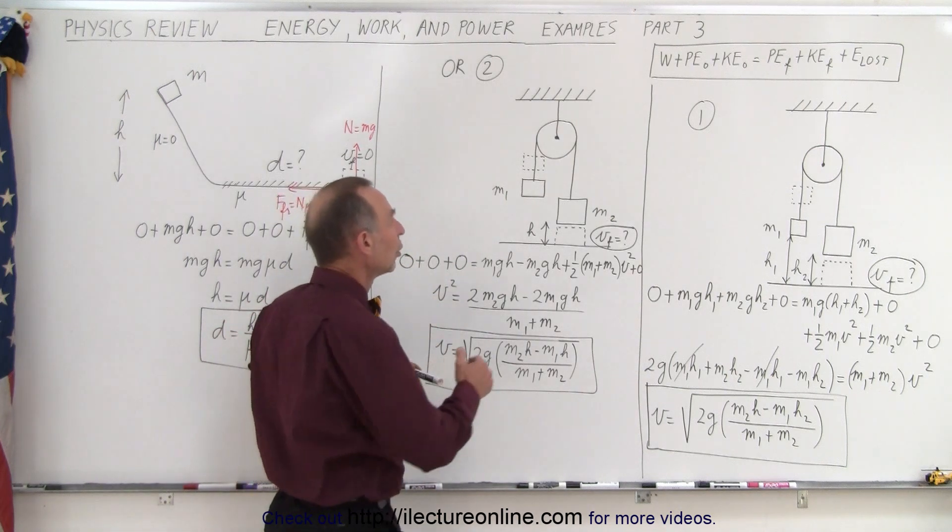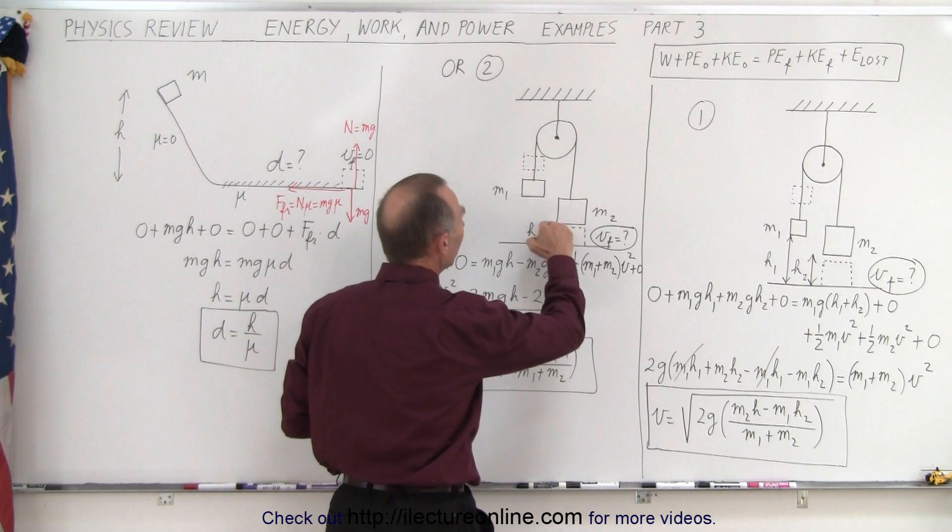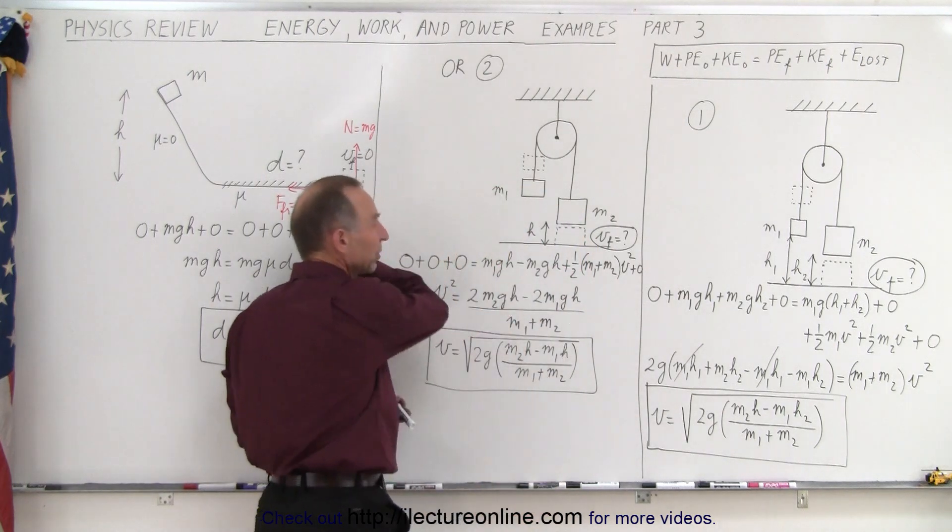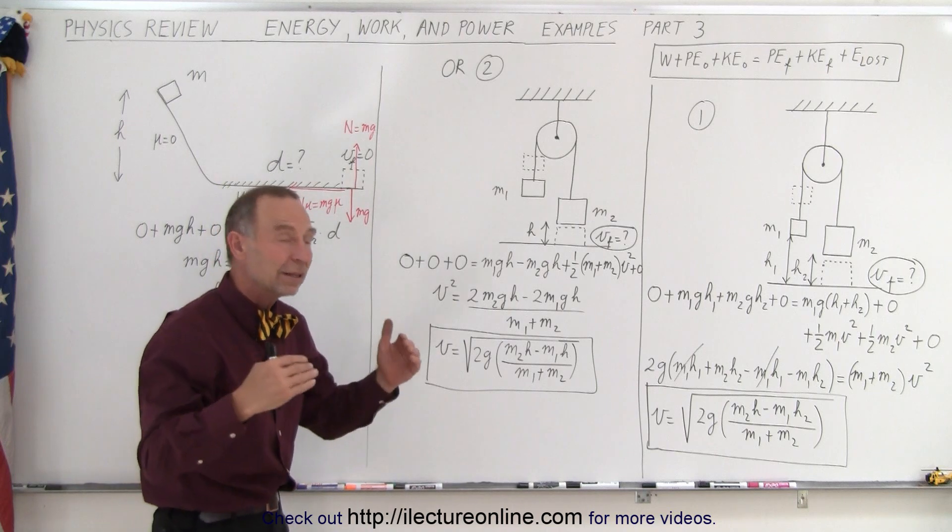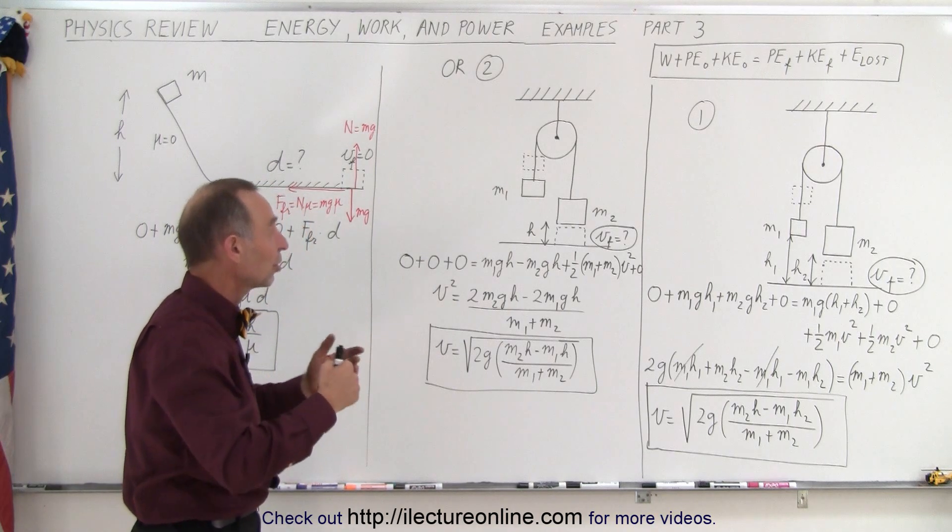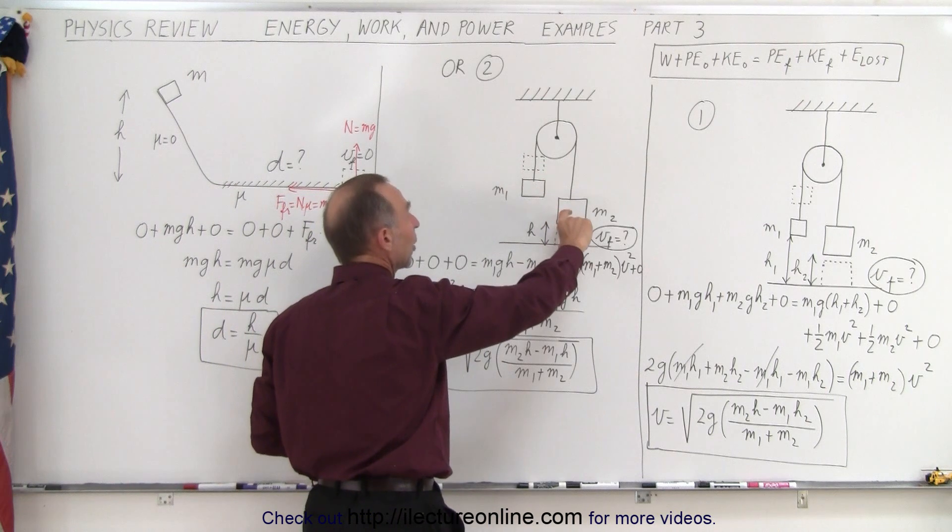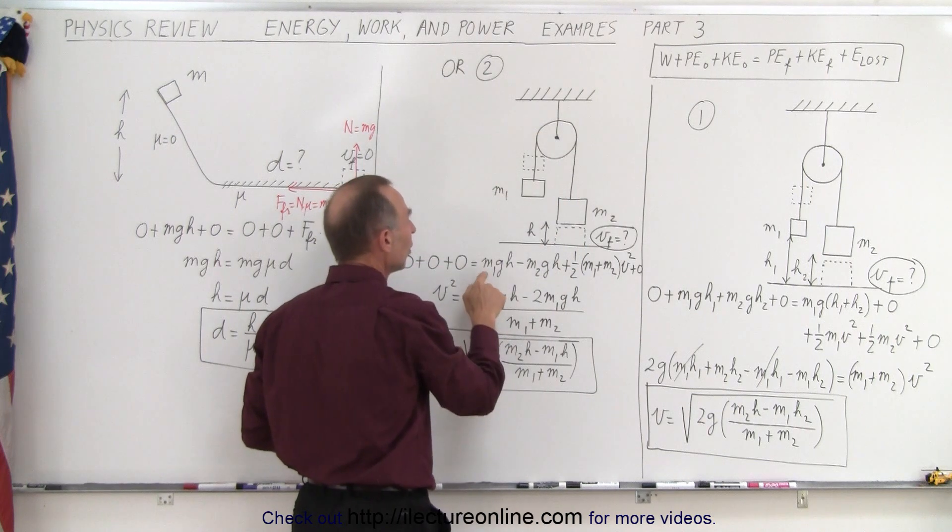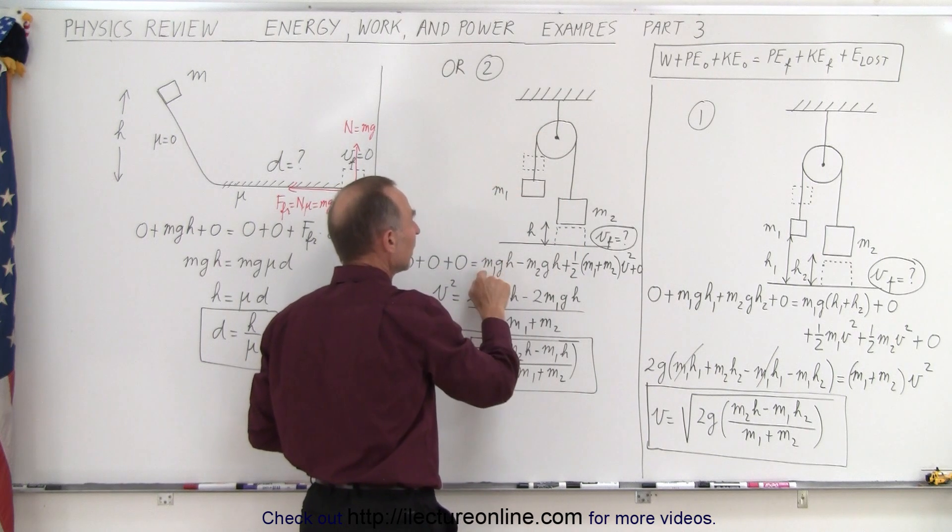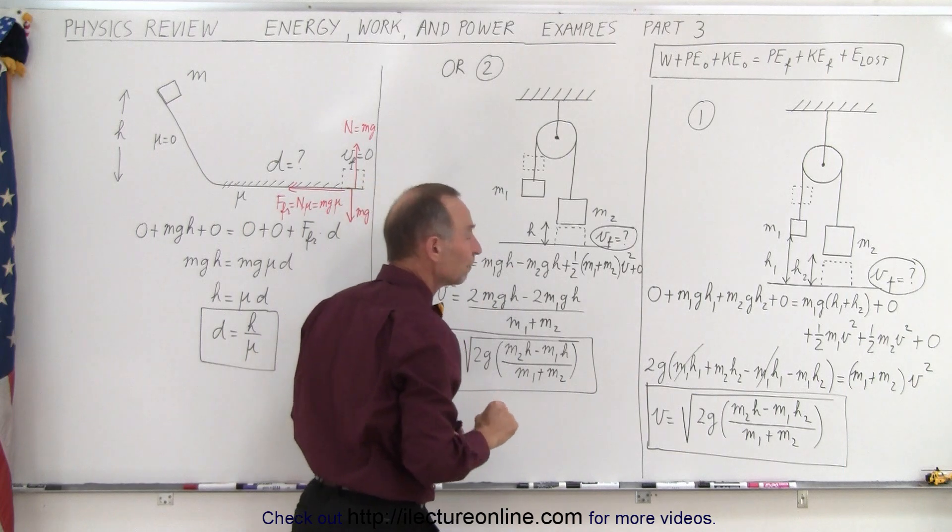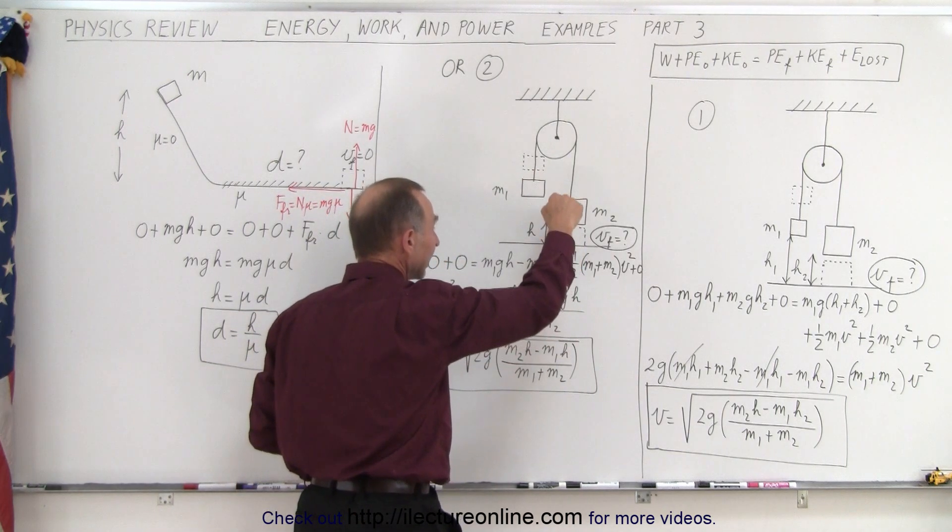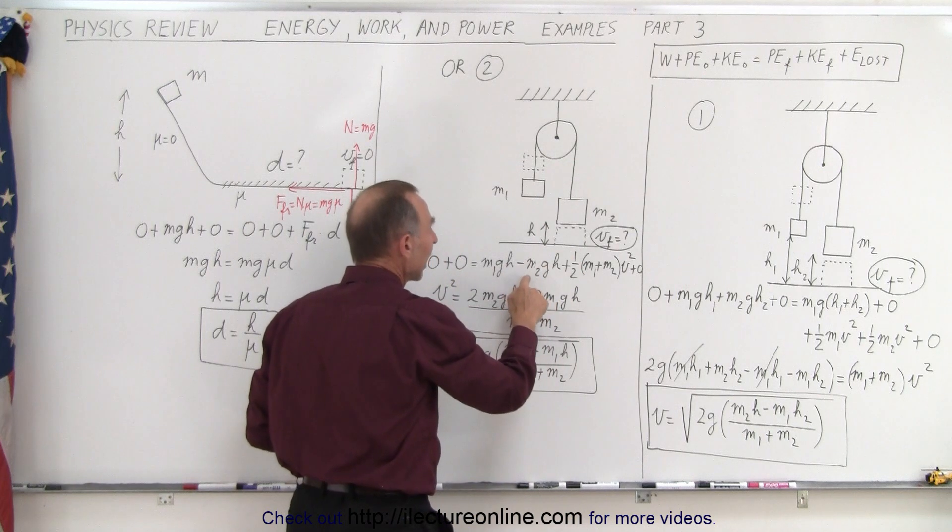So we arbitrarily choose our zero height for block two where it's at and the zero height for block one over there, so no potential energy initially. Relative to those heights, how did the potential energy change? Block one gained however much block two lost. Block two went down a distance h, that means block one went up a distance h, so from the zero position block one gained this much potential energy. Block two lost potential energy from the zero height and it went downward, so it's minus m2gh.